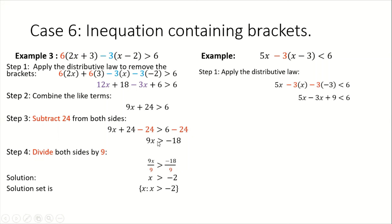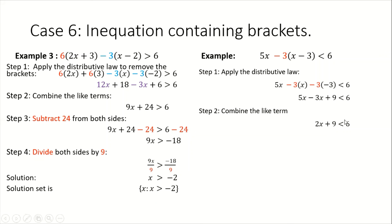At this stage we combine the like terms. We have 5x and minus 3x — those are like terms and can be combined to give one term. 5x minus 3x gives us 2x. We put back our plus 9, our inequality sign, and our 6.